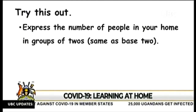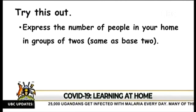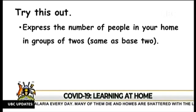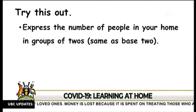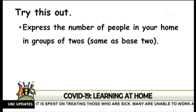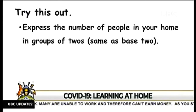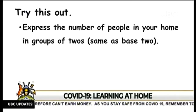Try this one out: express the number of people in your home in groups of 2s. This is the same as base 2. You might be 3 people in a home — can you try to do the grouping such that at the end of the day it is expressed in groups of 2s? If you are 9, the challenge is on. Make sure that you express in groups of 2s, because base 2 uses only the first 2 digits: a 0 and a 1. You can write it down. When we come back on air, you will be able to share with us what you finally came up with.